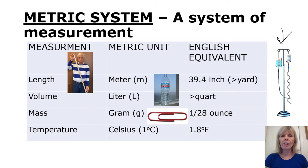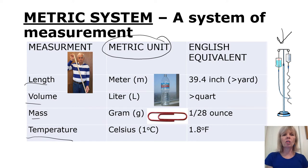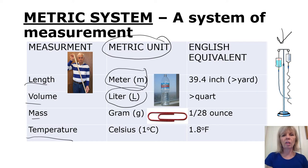With the metric system, one of the things I want you to know are the basic metric units for length, volume, mass, and temperature. For length, your basic metric unit is a meter, abbreviated with M. For volume, it's a liter, abbreviated with L. Mass, we use the unit gram, abbreviated with G. And for temperature, the basic metric unit is Celsius.